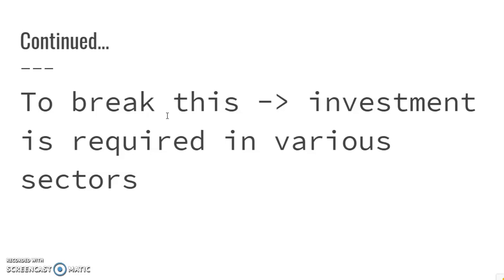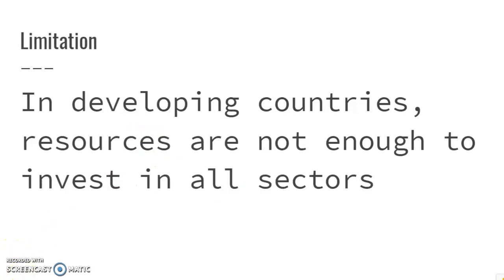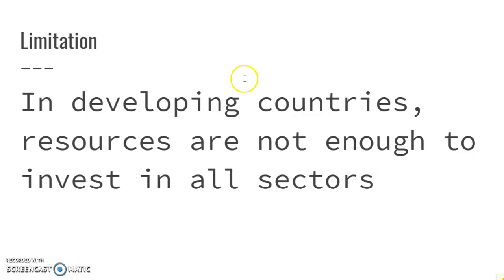In a developing program, all sectors of the economy — whether manufacturing, agriculture, or any other — should grow simultaneously so as to keep the proper balance between industry and agriculture, consumer goods and capital goods, and domestic and external goods. Coming to the limitations: in developing countries, resources are not enough to invest in all sectors simultaneously. They need to prioritize sectors, which leads to unbalanced growth. Balanced growth requires huge simultaneous investment in different sectors, but developing countries lack the savings and resources to do so. This is the most important limitation of the balanced growth theory.